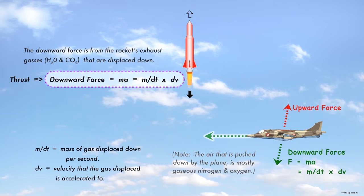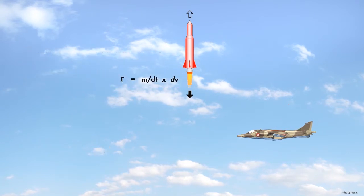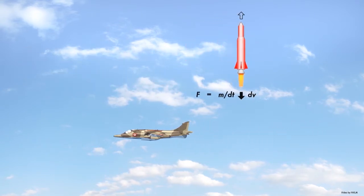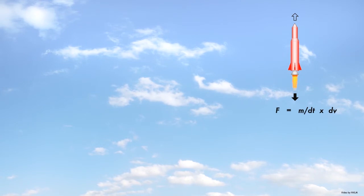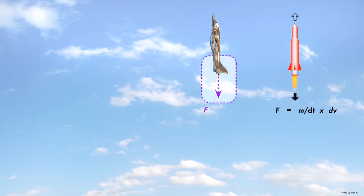Both equations are based on a force being created by pushing gases downwards. To put it another way, in a vertical climb, engine thrust is generating all the lift.